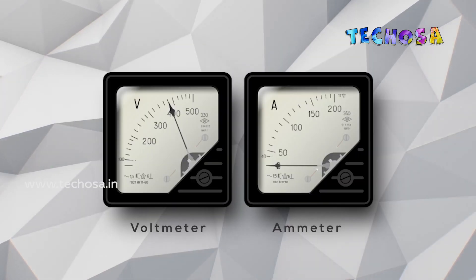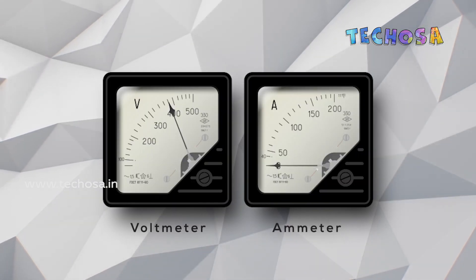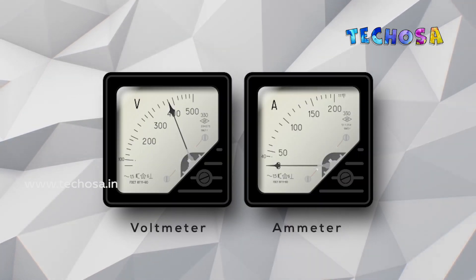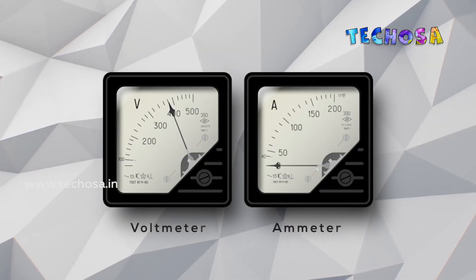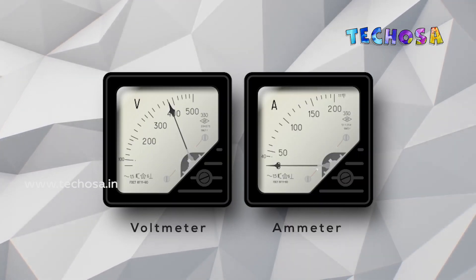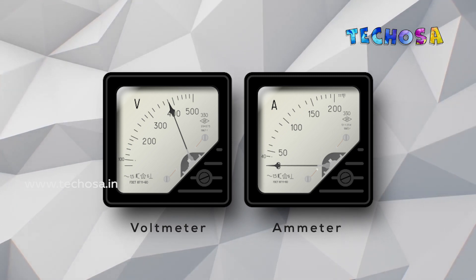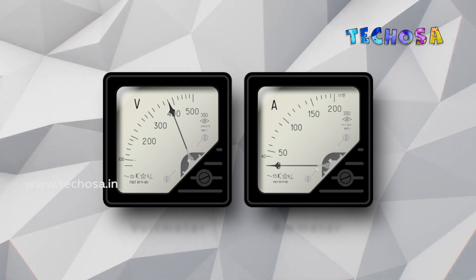In earlier days, a voltmeter was used to measure voltage and an ammeter was used to measure current. Now we have covered the basics of voltage, current, and resistance.